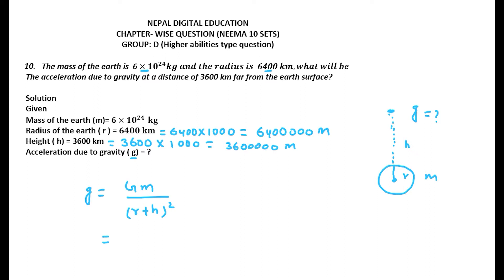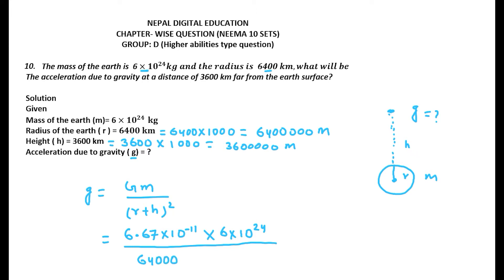Here, capital G is the gravitational constant and its value is 6.67×10⁻¹¹. The mass is 6×10²⁴ kg. R is 6,400,000 meters plus height of 3,600,000 meters, all squared in the denominator.